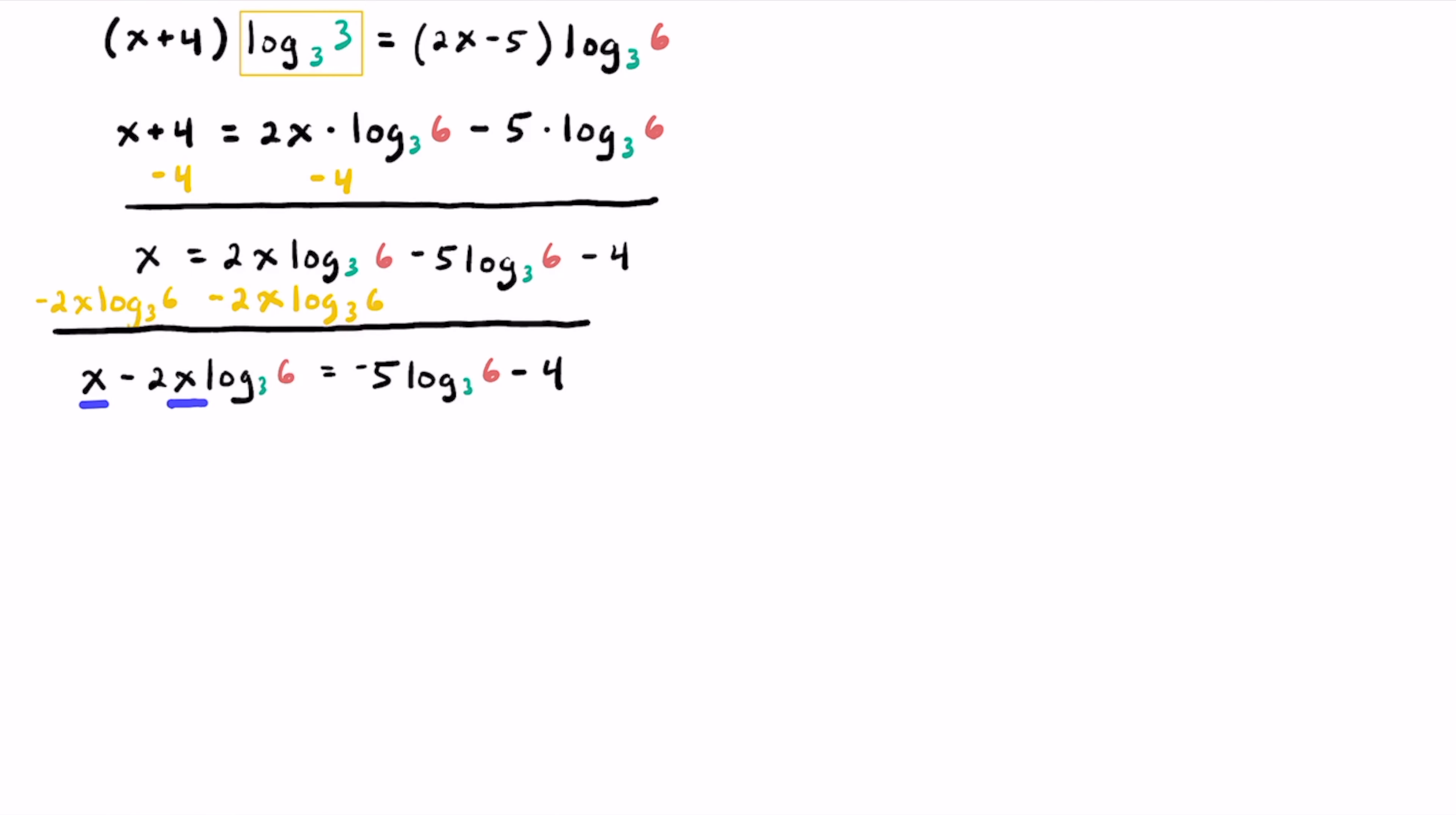Notice that we do have x in both of these terms here, so if we just want to have it in one location, we could factor it out as our GCF. So factoring x out from x, we're left with 1 minus, and then we're going to have 2 times this log base 3 of 6.